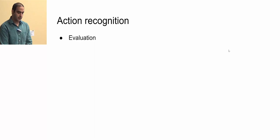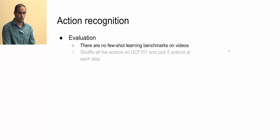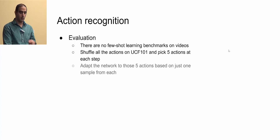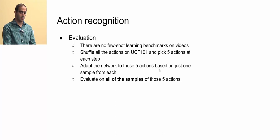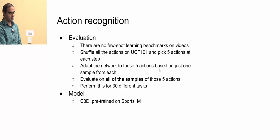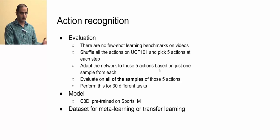For action recognition, there are no existing few-shot learning benchmarks on videos, so we used UCF101. We shuffle all actions, pick five actions at each step, sample one example per action, train our network on those, and evaluate on all other examples of those classes — repeated for 30 tasks and averaged. The model is C3D pre-trained on Sports-1M, and we use Kinetics for meta-learning or transfer learning.